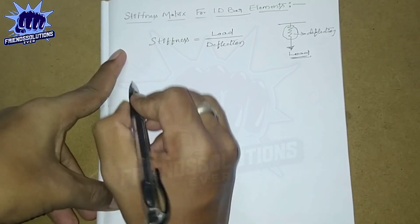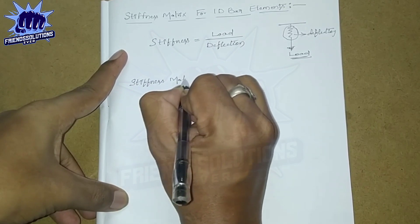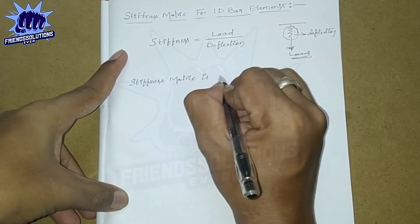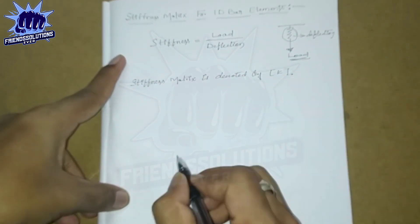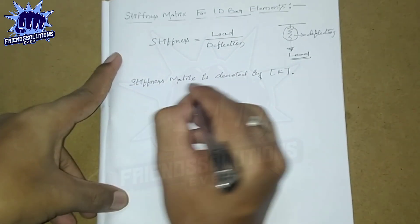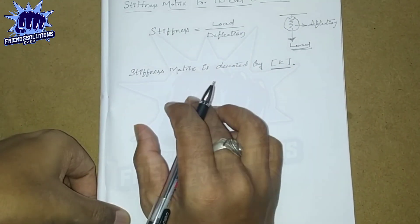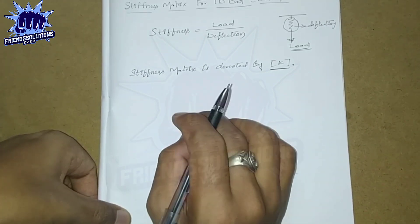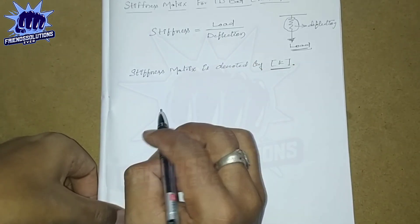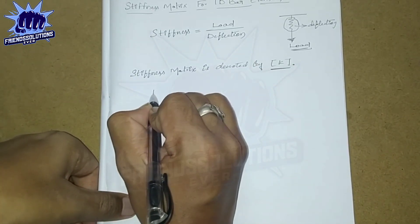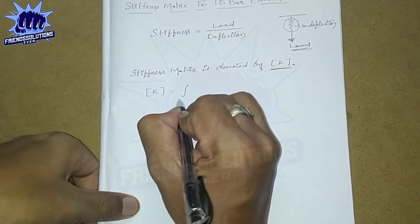The stiffness matrix is denoted by [K]. For this derivation you need to remember one small equation. That equation is: matrix [K] is equal to the integration from 0 to L of B-transpose times D times B times dV.